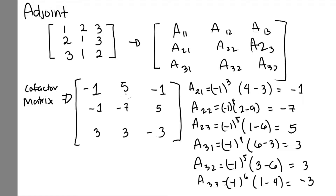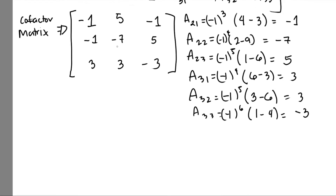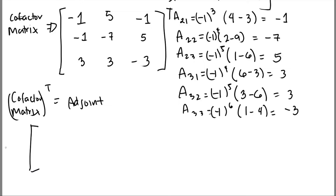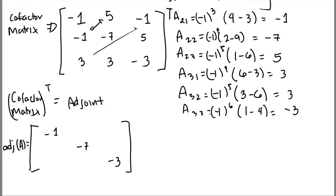To get the adjoint, we transpose the cofactor matrix — we flip the positions of elements across the principal diagonal. The principal diagonal (1, −7, −3) stays. Swapping off-diagonal elements gives: adj(A) = [1, −1, 3; 5, −7, 3; −1, 5, −3].